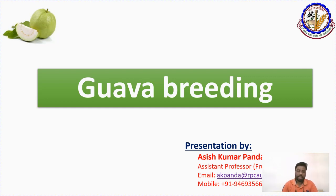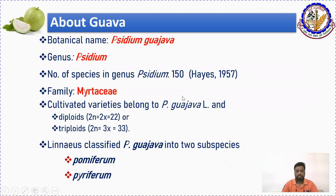As a breeder in this course, we are dealing with perennial fruit crop breeding. Among the perennial fruit crops, guava is one of the most important crops. Botanically, guava is Psidium guajava, which belongs to the genus Psidium, and there are approximately 150 species in this genus.